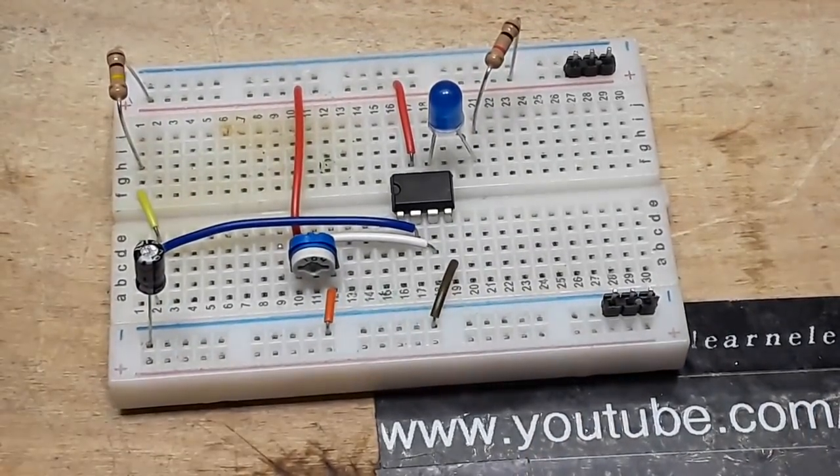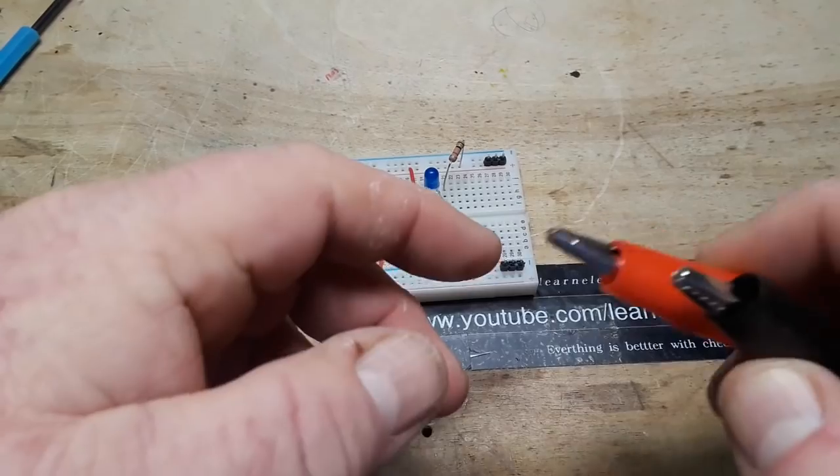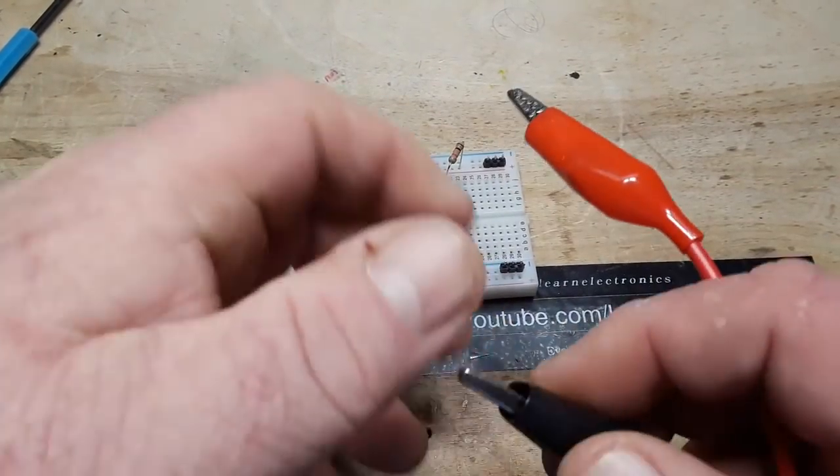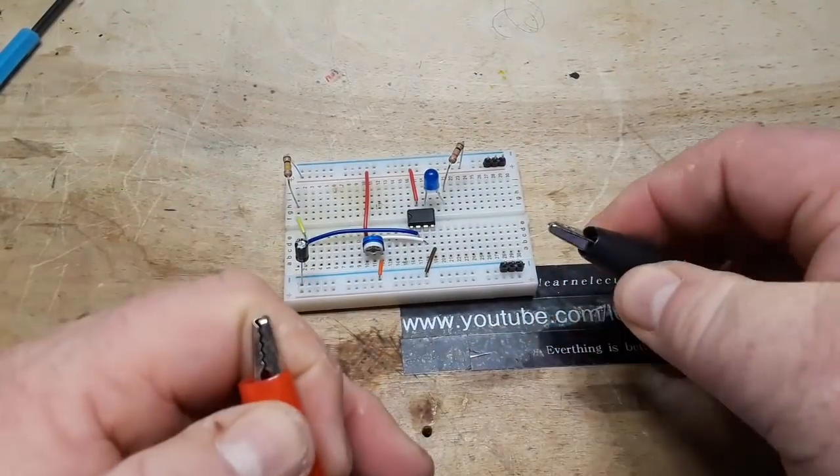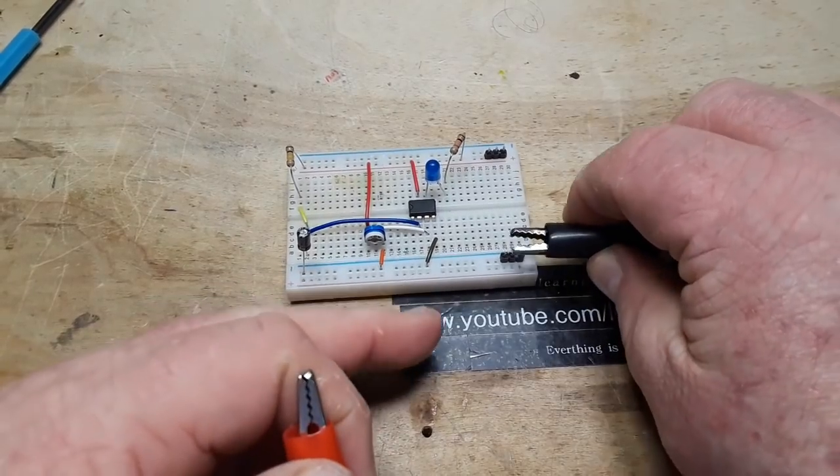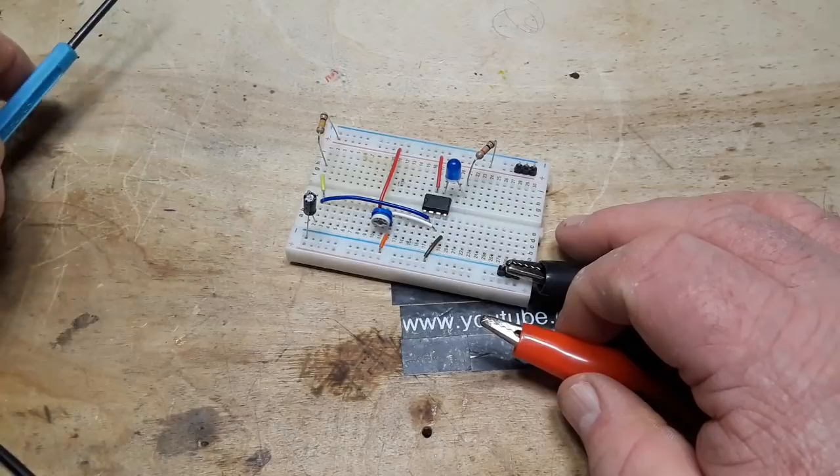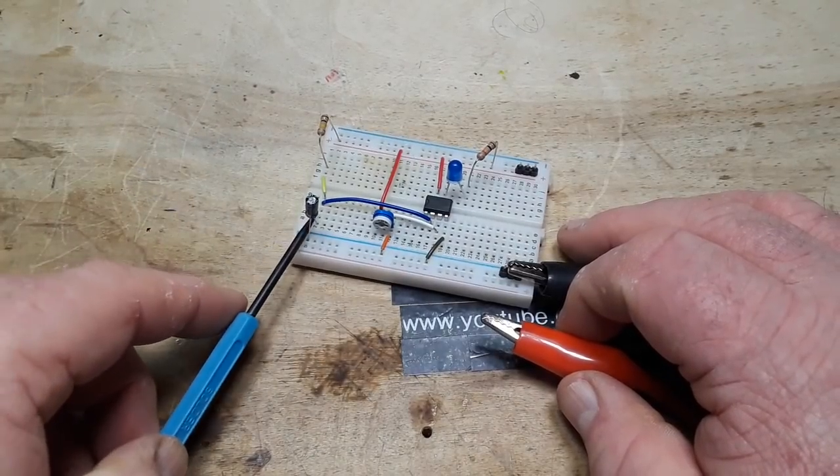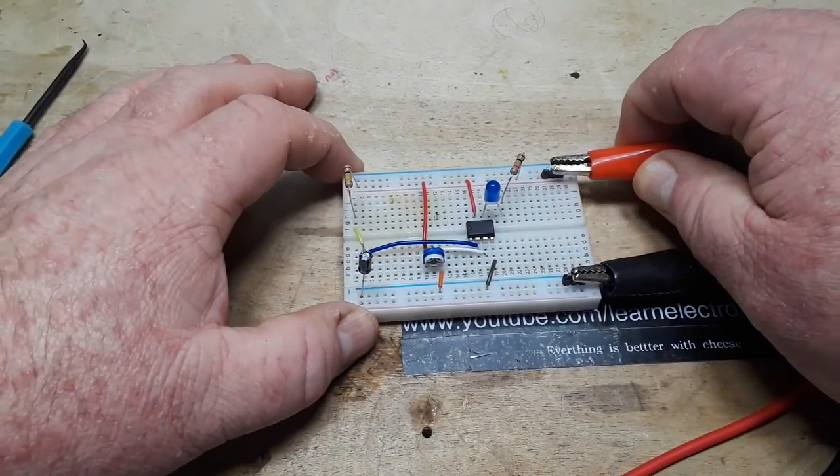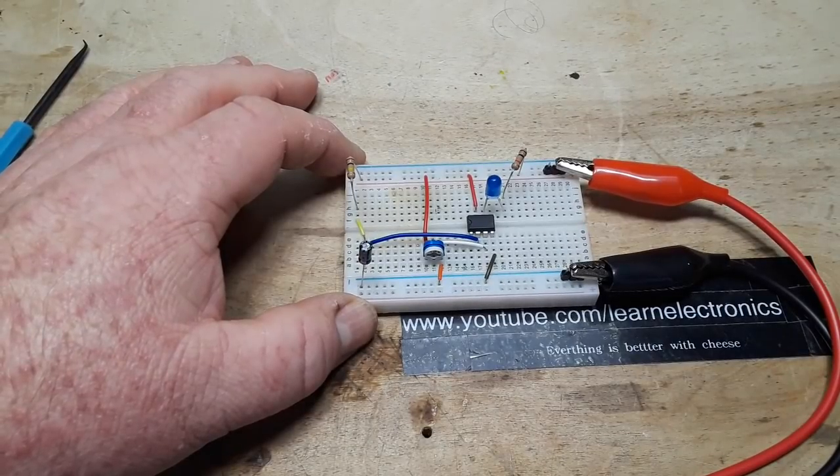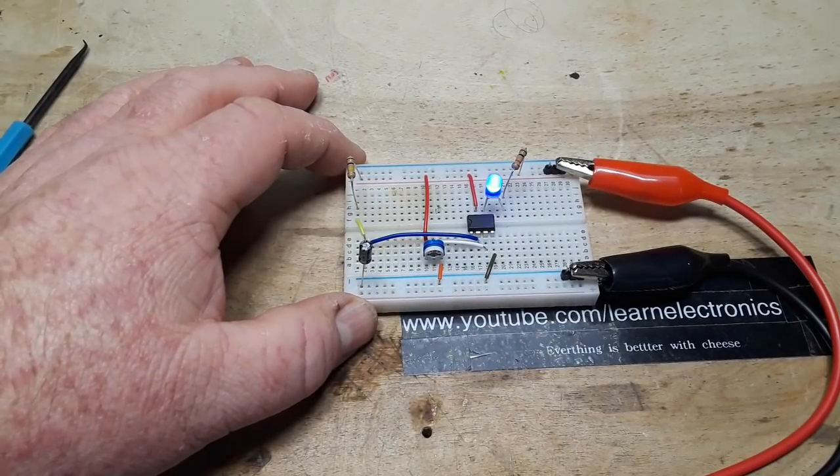So, let's power this up. I've got the power supply set for 9 volts. Untangle my wires. I should also discharge the capacitor. All right. So, we turn it on. And it lights up.